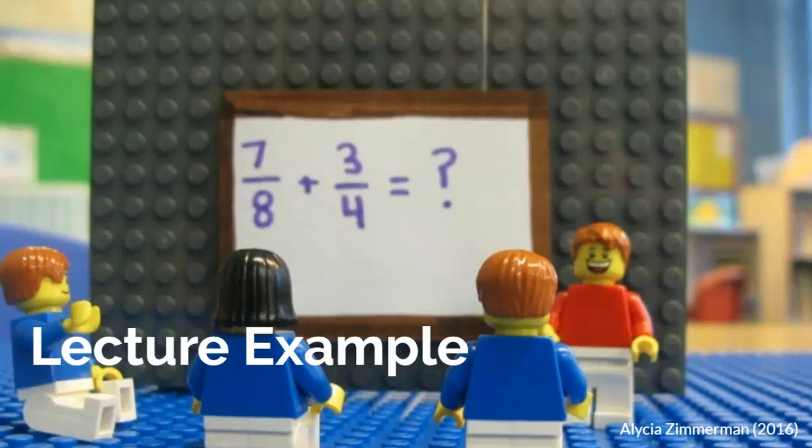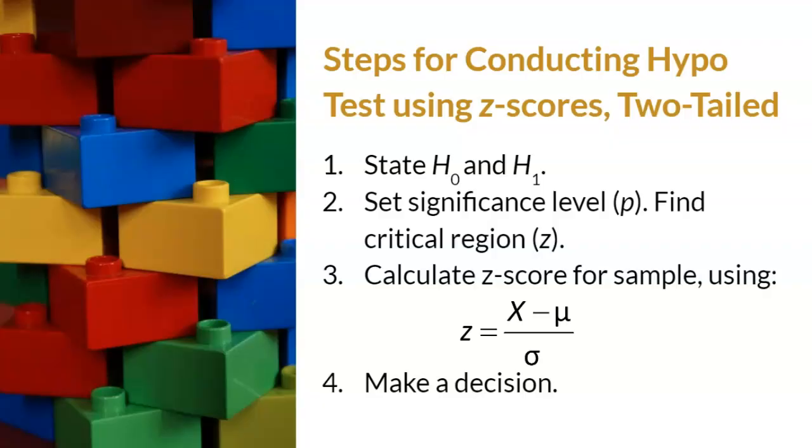Now that we reviewed the four steps of hypothesis testing, are you ready to practice your new knowledge? I have one practice example for you to review. This is a short summary of the four steps that we described above. Please note that these steps are for two-tailed hypothesis tests using z-scores. Please pause the video to write down these steps on the video handout.